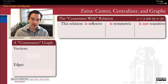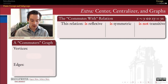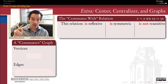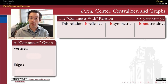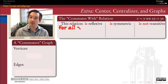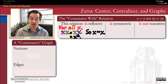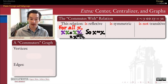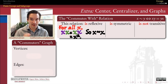Why is a graph an appropriate thing for thinking about centers and centralizers? Let's think about the relation we can define on the elements of a group, which is the 'commutes with' relation. We define x as related to y in group G if x and y commute with one another. Well, first of all, it's a reflexive relation, because every element commutes with itself — x times x equals x times x, they're both equal to x squared. That's why every element belongs to its own centralizer, as we saw in the last video.